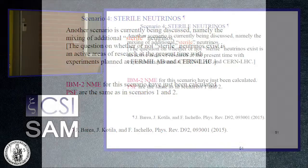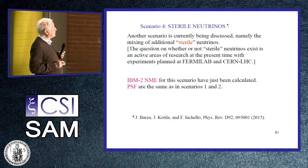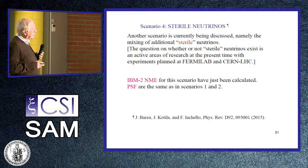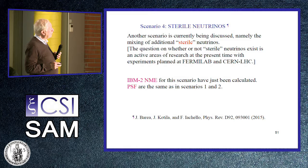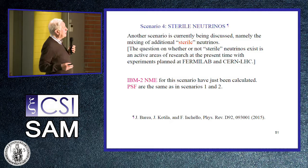We come now to the final possible scenario — the occurrence of sterile neutrinos. The mixing of additional sterile neutrinos is currently a very active area of research, with experiments both at Fermilab and at CERN. There is a search for sterile neutrinos; at Fermilab, this is going to be the major research program in the new scenario where, because of the accord between CERN and Fermilab, all neutrino physics will be done at Fermilab.